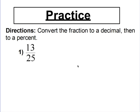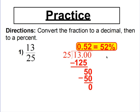Now try converting 13 over 25 into a decimal first by dividing, then move the decimal point over to change it into a percent. 13 divided by 25 gives 0.52, which is 52 hundredths. Moving the decimal point two spaces to the right, 52 hundredths equals 52%. That makes sense because 52% means 52 out of 100, and so does 52 hundredths.